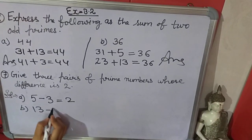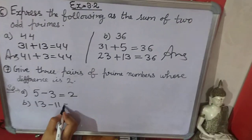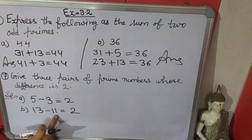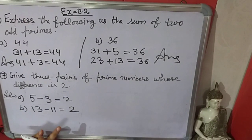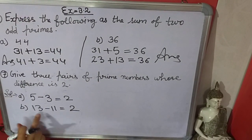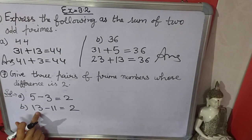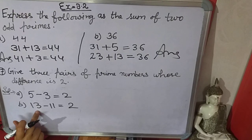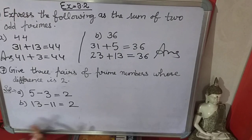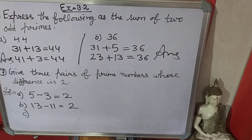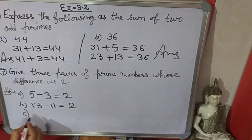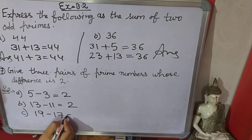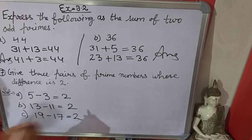Next is 13 minus 11 equals 2 — both are prime numbers. Prime numbers are those which have only two factors: 1 and the number itself. Now the third pair: 19 minus 17 is equal to 2.